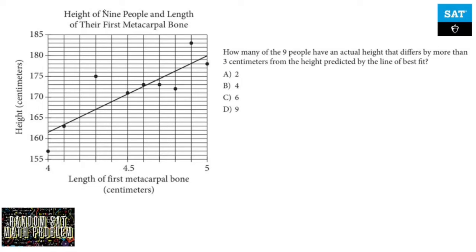All right, so what do we have here? The height of nine people and length of their first metacarpal bone. So we got a scatterplot, we measure nine people out, length of their first metacarpal bone between four and five, and this is how tall they are. How many of the nine people have an actual height that differs by more than three centimeters from the height predicted by the line of best fit?